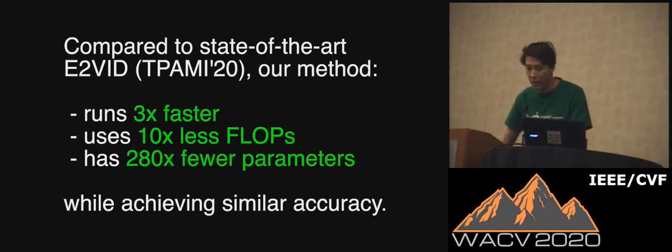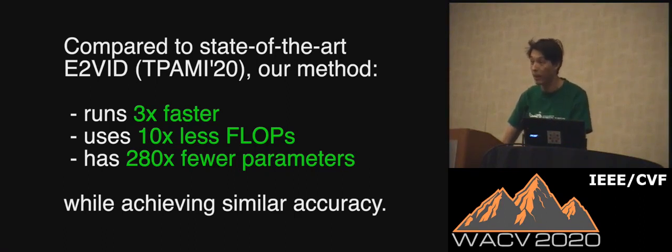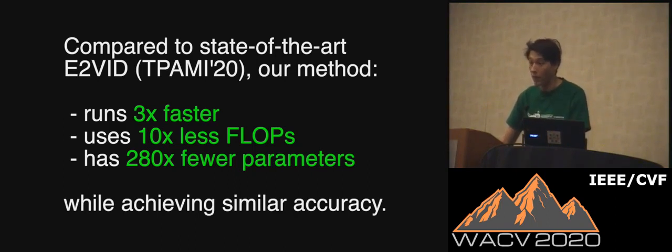And interestingly, we actually achieved this with a very small neural network — 280 times fewer parameters. That means our network has only 0.4% the number of parameters as the previous method, and all of this while achieving quite similar accuracy. So it gives a hint that the required capacity of the network is much smaller than we initially thought.